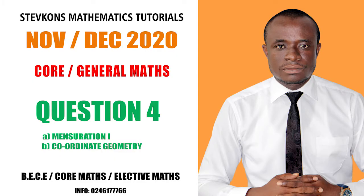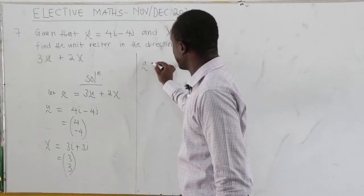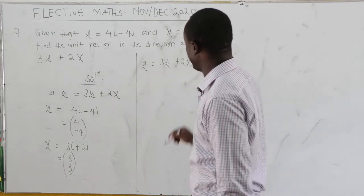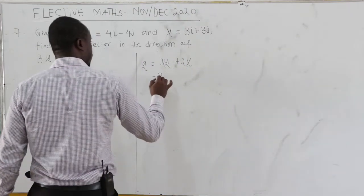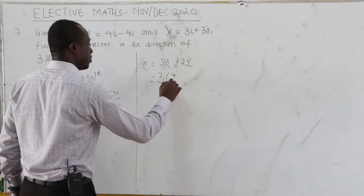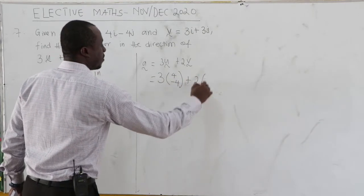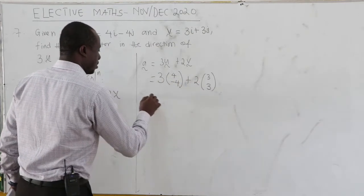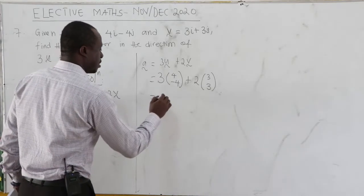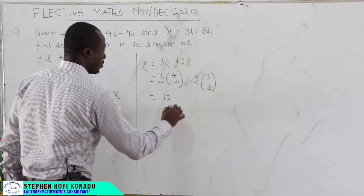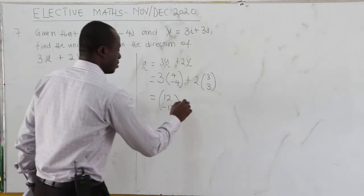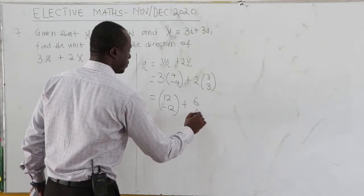Our vector a becomes 3u plus 2v. Our u is (4, -4) and our vector v is (3, 3). Using scalar multiplication: 3 times (4, -4) gives (12, -12), since 3 times 4 is 12 and 3 times negative 4 is negative 12. Then 2 times (3, 3) gives (6, 6), since 2 times 3 is 6.